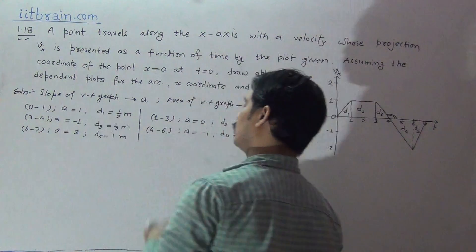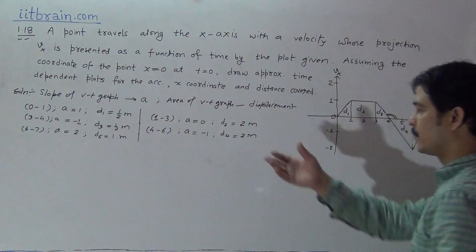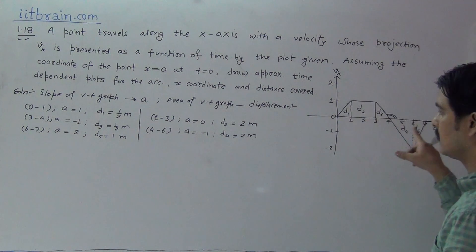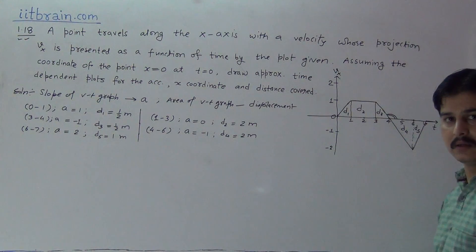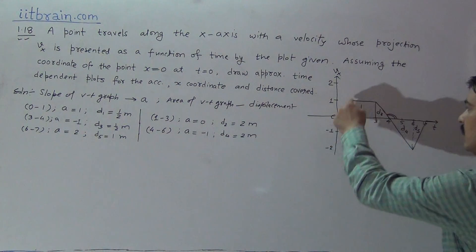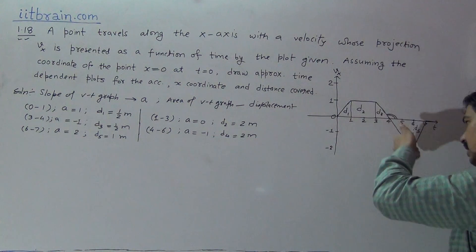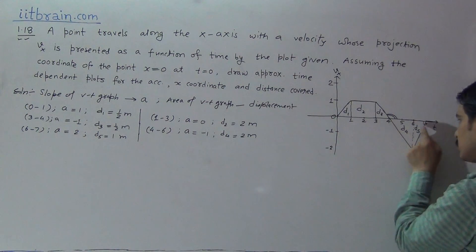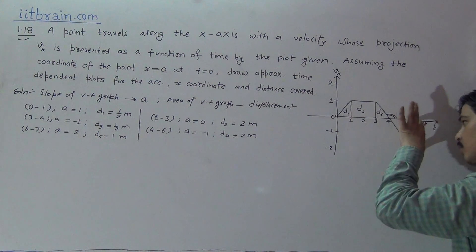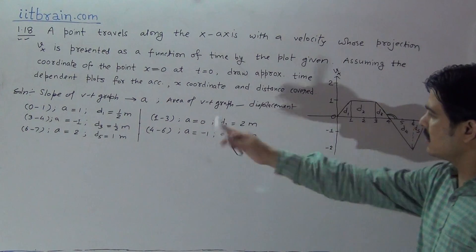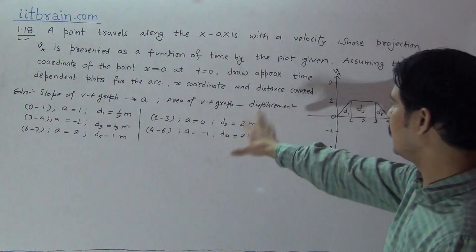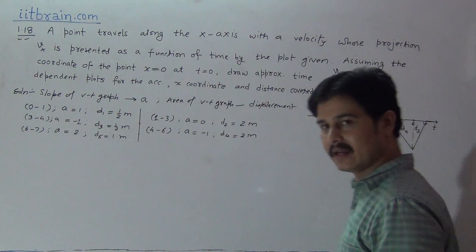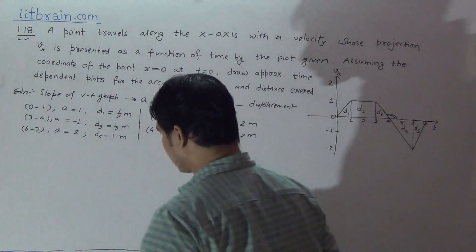So, in these five parts, the accelerations are: 1, 0, minus 1, minus 1, and 2; and the displacements are: 0.5 m, 2 m, 0.5 m, 2 m, and 1 m. We obtained all these data from the vt graph by using the slope and area concepts.